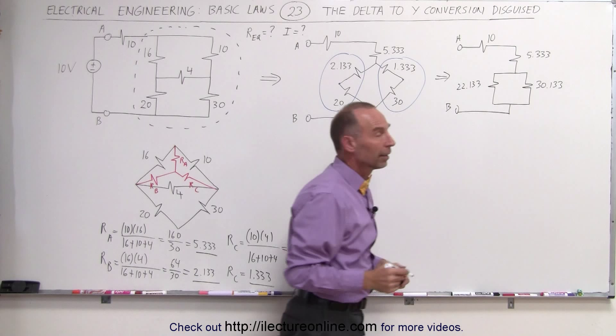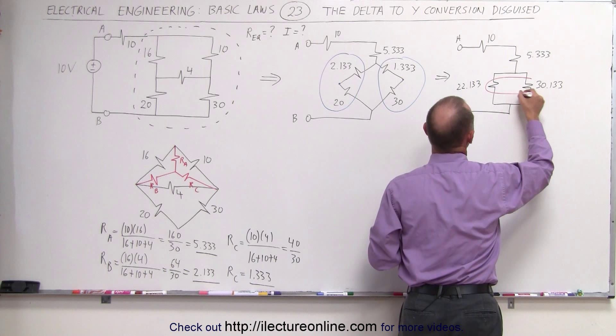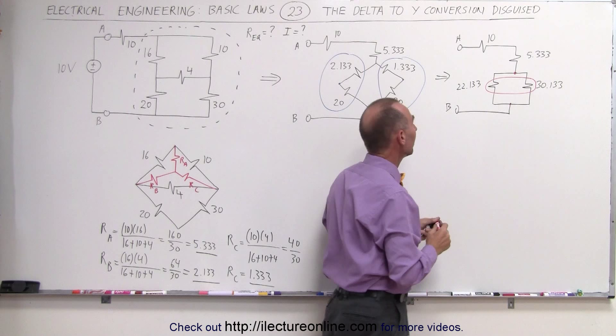Now we can combine these two resistors. They are in parallel. They share a common node at the top and a common node at the bottom. Therefore, they are in parallel. There we use the product over the sum.